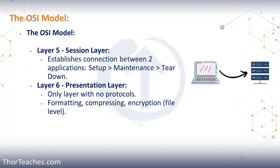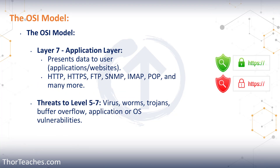Layer 6 is also really the only layer that has no protocols. Layer 7 is the application layer. While this is not the actual applications, this is where the data is presented to the user using their applications — whether that's a website or whatever application you're using. It's also where we have all the user protocols: HTTP, HTTPS, FTP, SNMP, IMAP, and POP. The last three are what we use for emails. All of this happens on layer 7.